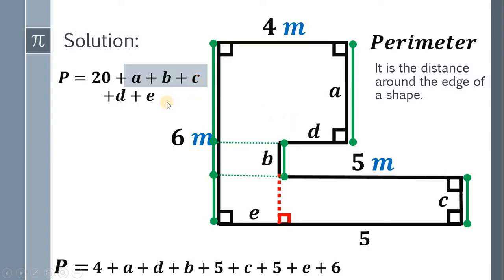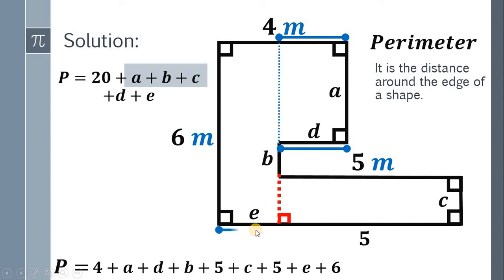Next, how about the value of D plus E? At this point, we draw vertical lines like this. Notice, this side measures D, and on the opposite side is also D. And this side is E, and the opposite side also measures E. It follows that E, plus D, is equal to 4 meters. Therefore, this D, plus E, is simply 4 meters. It follows that the perimeter of this figure must be 20, plus the value of A, plus B, plus C, is 6 meters, plus the value of D, plus E, is 4 meters.